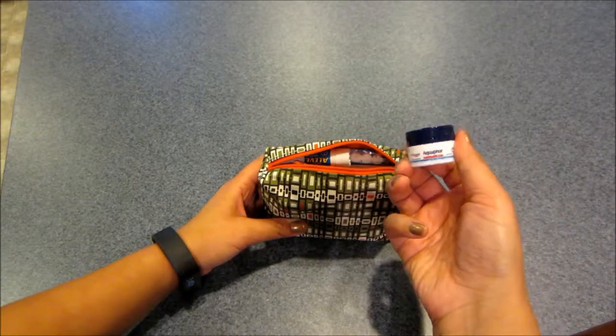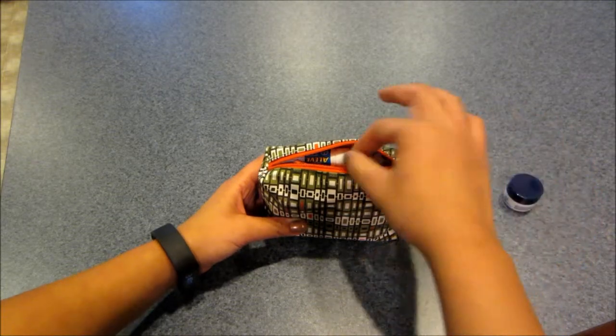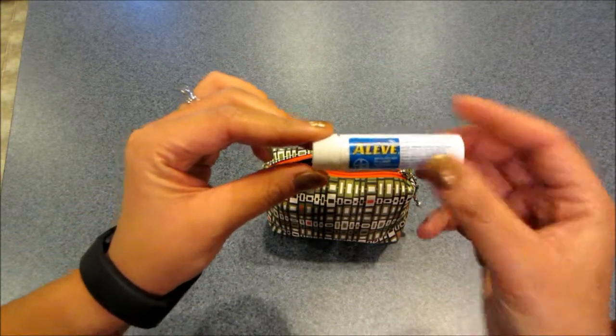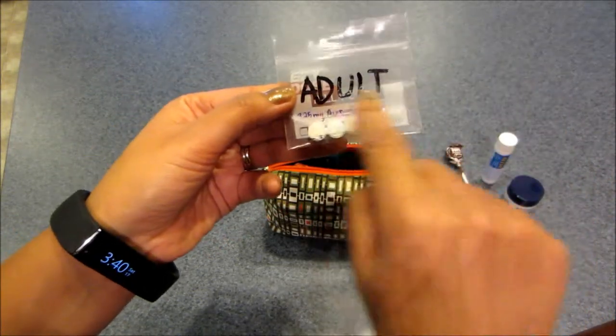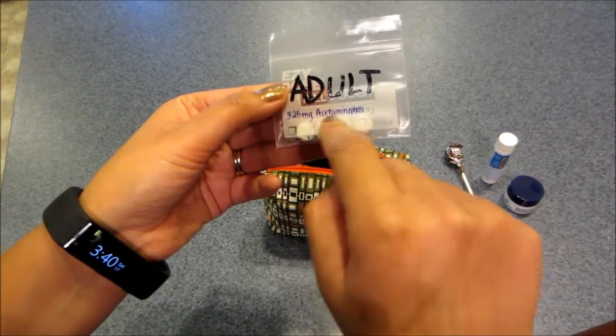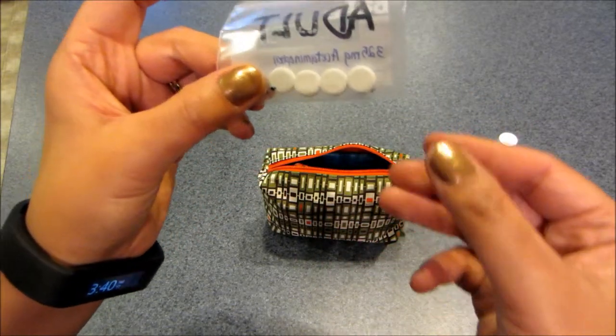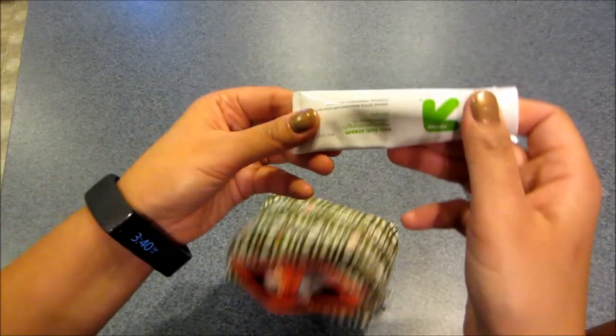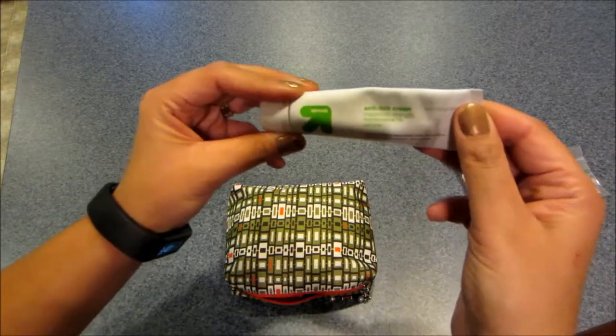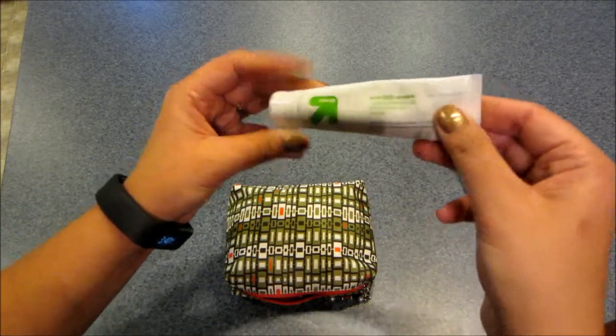I have a mini Tootsie Pop, a little tub of Aquaphor, a little thing of Aleve, and then some more medicine. This is for adults and it's 325 milligrams of acetaminophen.